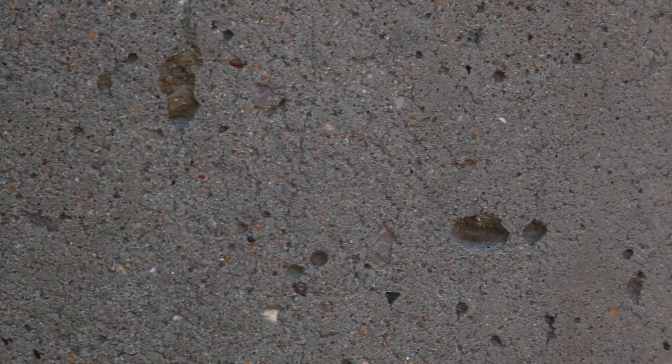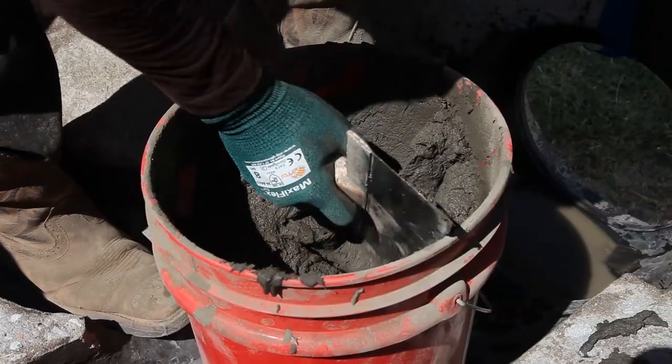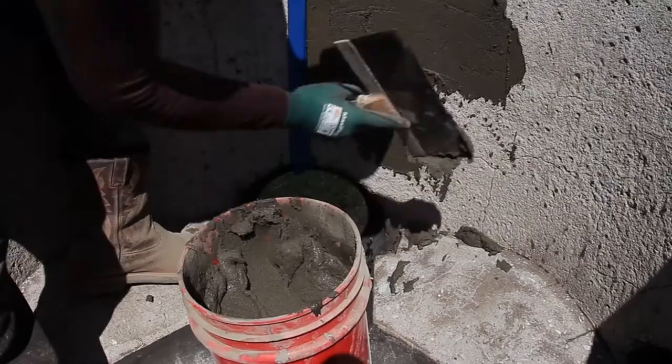Surface areas with spalls, areas of extreme concrete loss due to corrosion and deep bug holes, should be repaired using a high early strength cementitious mortar prior to coating.